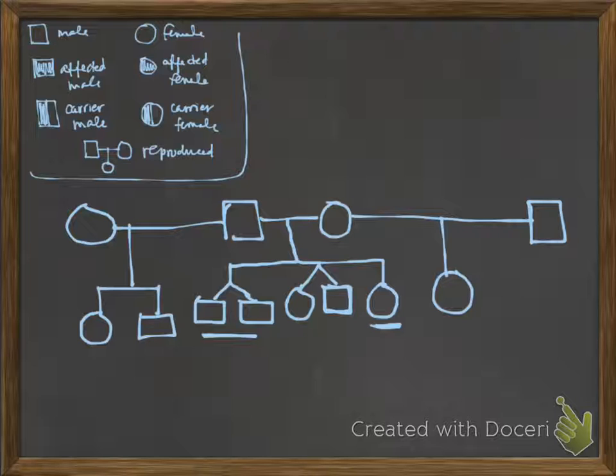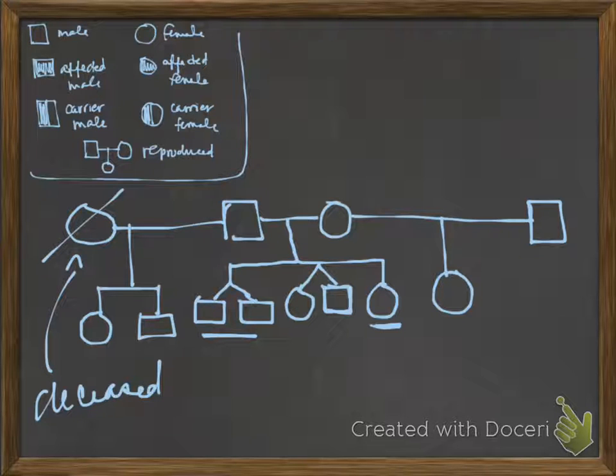These would be half-siblings. These are siblings who share one parent and where those parents have reproduced. Maybe this was a first marriage and his wife died. We typically put a single line through an individual to represent that they're deceased. So, this would be deceased. Maybe that other partner is still living.